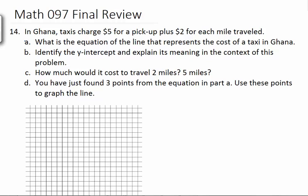14. In Ghana, taxis charge $5 for a pickup plus $2 for each mile traveled. The first thing we want to know is the equation of the line representing the cost. Well, we know it costs $5, and we know $2 per mile. So the $2 is the variable, it's the one that's going to be constantly changing, so it's the one that gets the x. The y-intercept is what happens when x is 0. Well, when x is 0, you get y is 5. And this is the cost for pickup. It doesn't matter how far you go, you will always be paying $5.